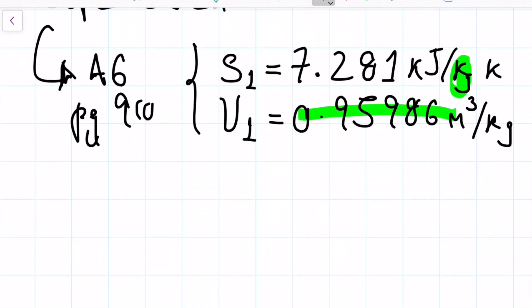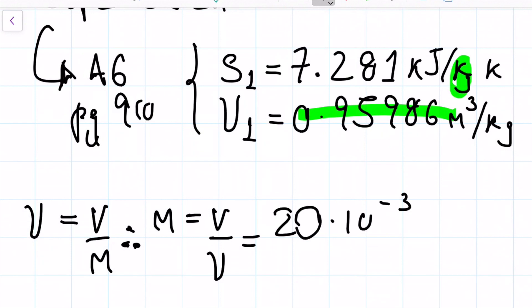So let's go ahead and grab the mass first. We know the specific volume, just looking at the units we know it's volume over mass. And therefore if we want the mass, we just need to divide the volume by the specific volume. In this case it's 20 times 10 to the minus three because we want to convert those liters into meters cubed.